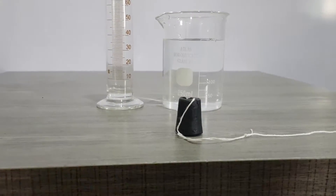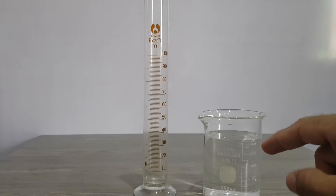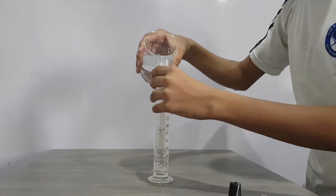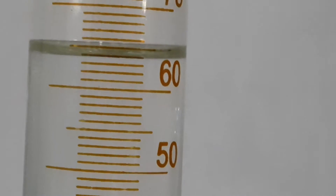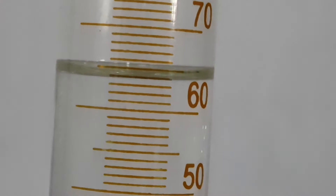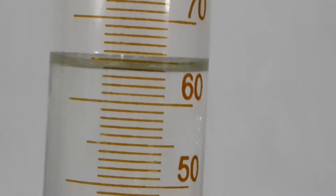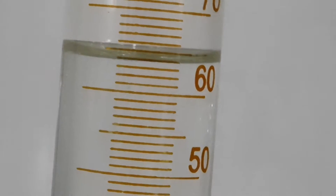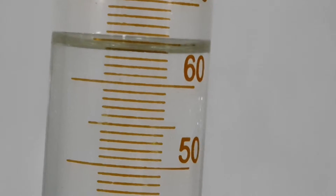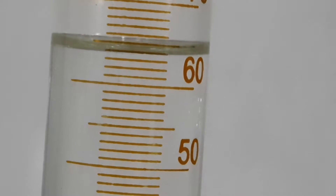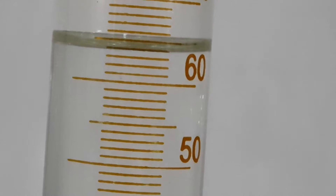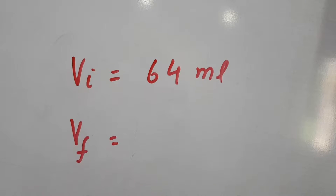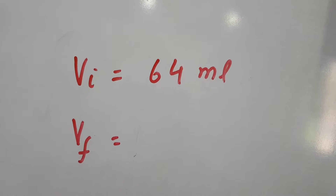Now add some water into the cylinder — stop. We will note the reading of the liquid, meaning water, in the cylinder. This is 64 ml. You will note the lower portion reading, because there is a meniscus — a curve — with an upper side and a lower side. Always read from the lower side. Note the initial volume: V initial is 64 ml.